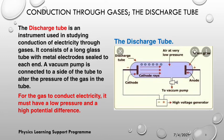The discharge tube consists of a long glass tube with metal electrodes sealed to each end. We have a vacuum pump connected to the side of the tube to alter the pressure of the gas in the tube. Now, this is very important.